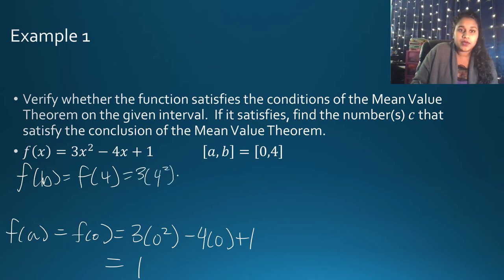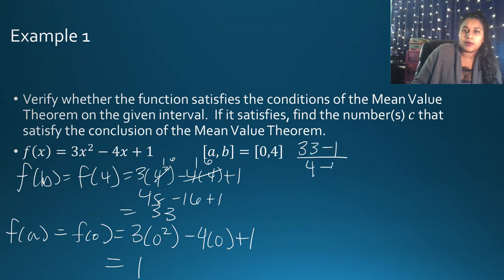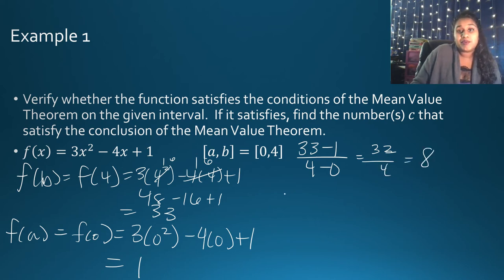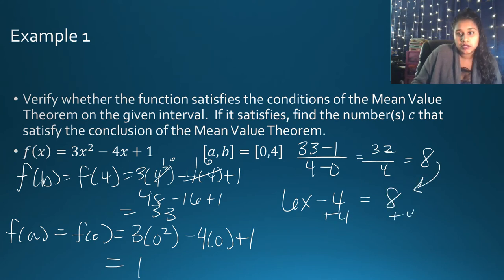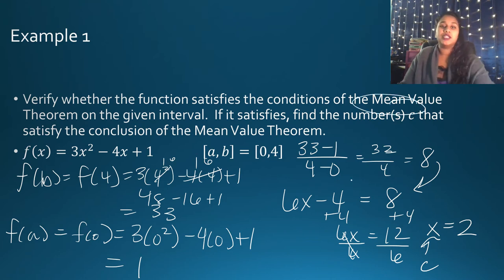So the average rate of change is (33 - 1) / (4 - 0) = 32/4 = 8. Setting F'(C) = 6X - 4 equal to 8, we get 6X = 12, so X = 2. Therefore C = 2, which is the number that satisfies the conclusion of the Mean Value Theorem.